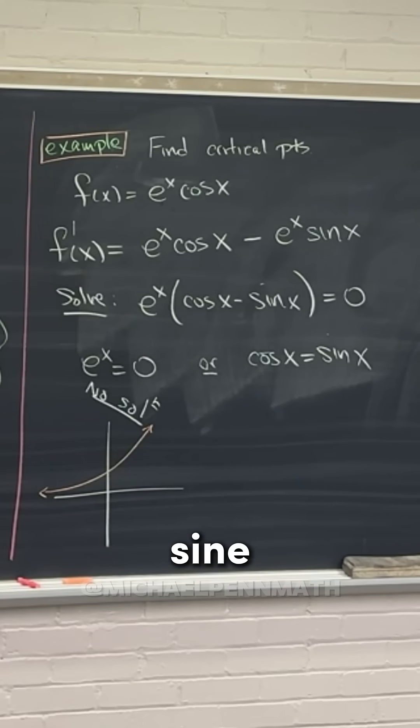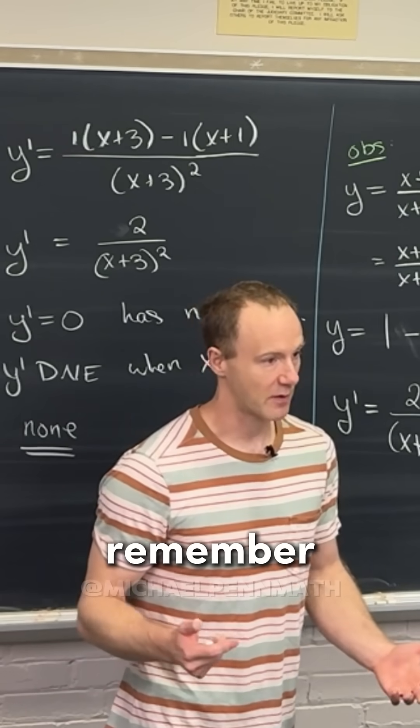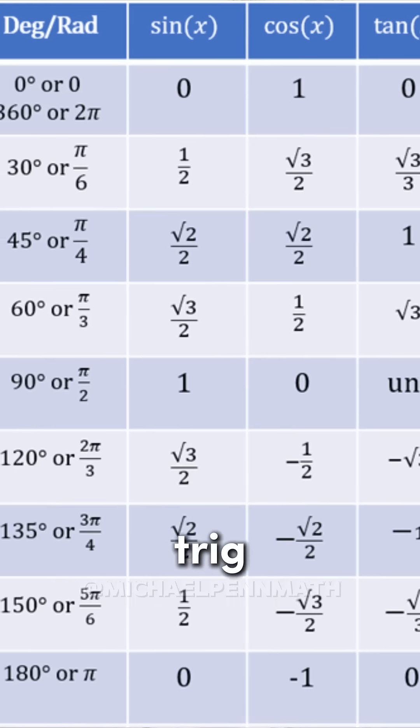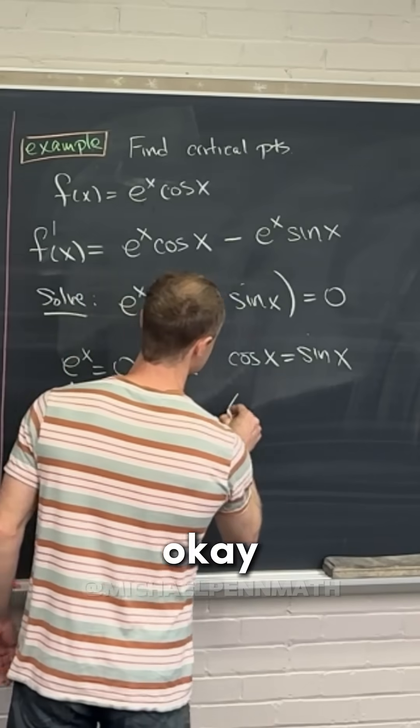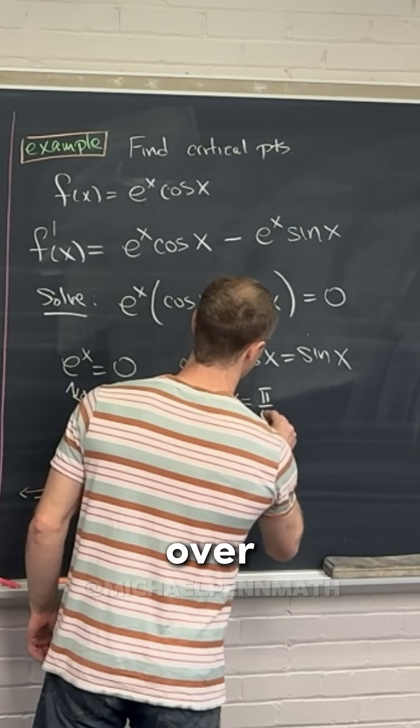Then when is cosine equal to sine? This is one to potentially remember, although you can look it up in a trig chart. Yeah, 45 degrees. Okay, so it's 45 degrees, which is pi over four.